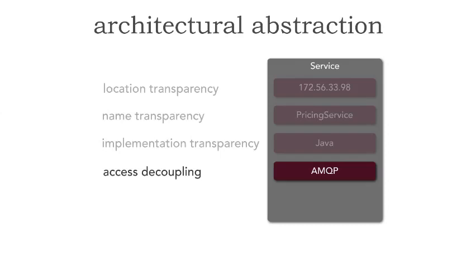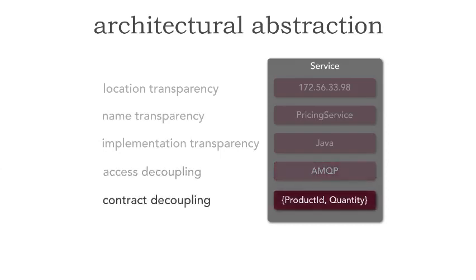The next one is access decoupling. This form of abstraction asks: do I need to know the protocol that you are using to accept requests? For example, I've got a pricing service located at 172.56.33.98 in Java using RabbitMQ with AMQP — Advanced Message Queuing Protocol. Do I have to use AMQP to get to this pricing service? That's what access decoupling really says. And finally, the hardest level of abstraction is contract decoupling. Here I have a pricing service written in Java that takes in a product ID and quantity. Can I pass in something different? Can I pass in just the product ID, or a SKU — maybe a different kind of identifier for a product? That's what contract decoupling really is.